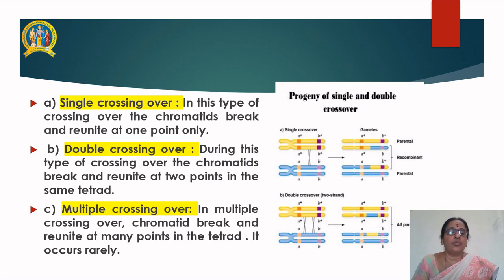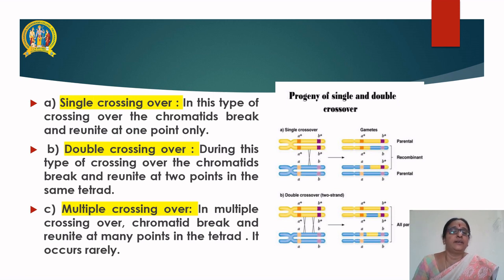In single crossing over, the chromatids break and reunite at only one point. In double crossing over, the chromatids break and reunite at two points in the same tetrad. In multiple crossing over, the chromatids break and reunite at many points in the tetrad. This occurs very rarely.